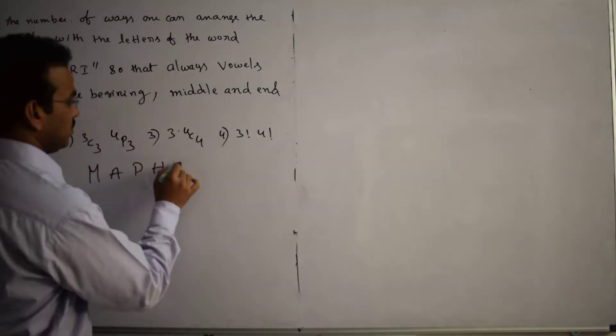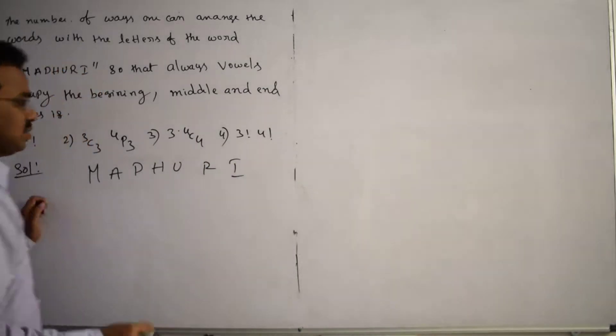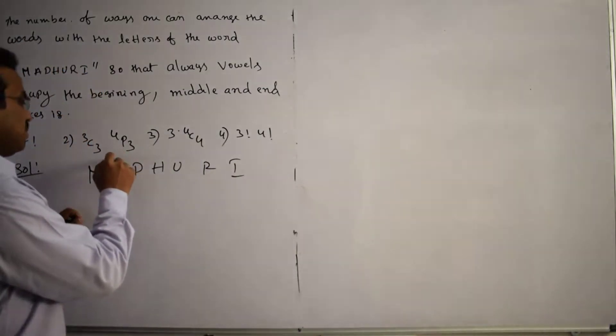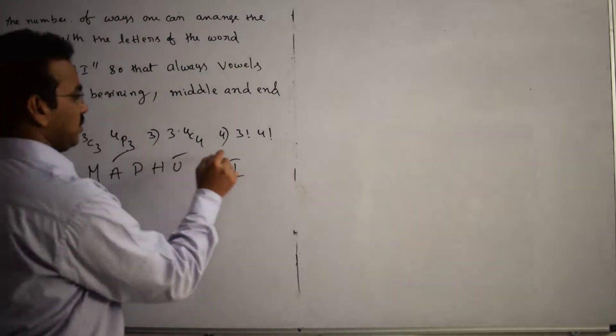M, A, D, H, U, R, I. Now, what are the vowels? Let me identify the vowels. The vowels are A, U, and I.